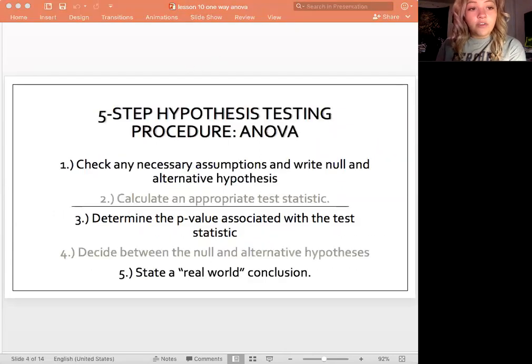So just a review of what that five-step hypothesis testing procedure is. Same thing for every single one. The main difference is the first and second step, because there's always going to be different assumptions and different null and alternative hypotheses. And then calculating that test statistic, it'll be different depending on the test. But then lastly, determine that p-value, decide between the null and alternative, and state a real-world conclusion. That's all going to be the same. It's the same five steps for the ANOVA test.